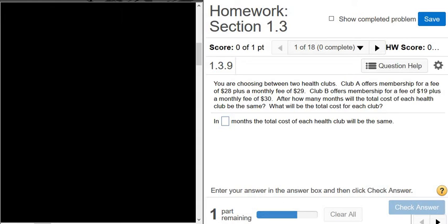So let's see, we have Club A. Club A charges a fee of $28 and a monthly fee of $29, so this here is the monthly fee. And then Club B offers a fee of $19 and then a monthly fee of $30. So this here is the monthly fee.